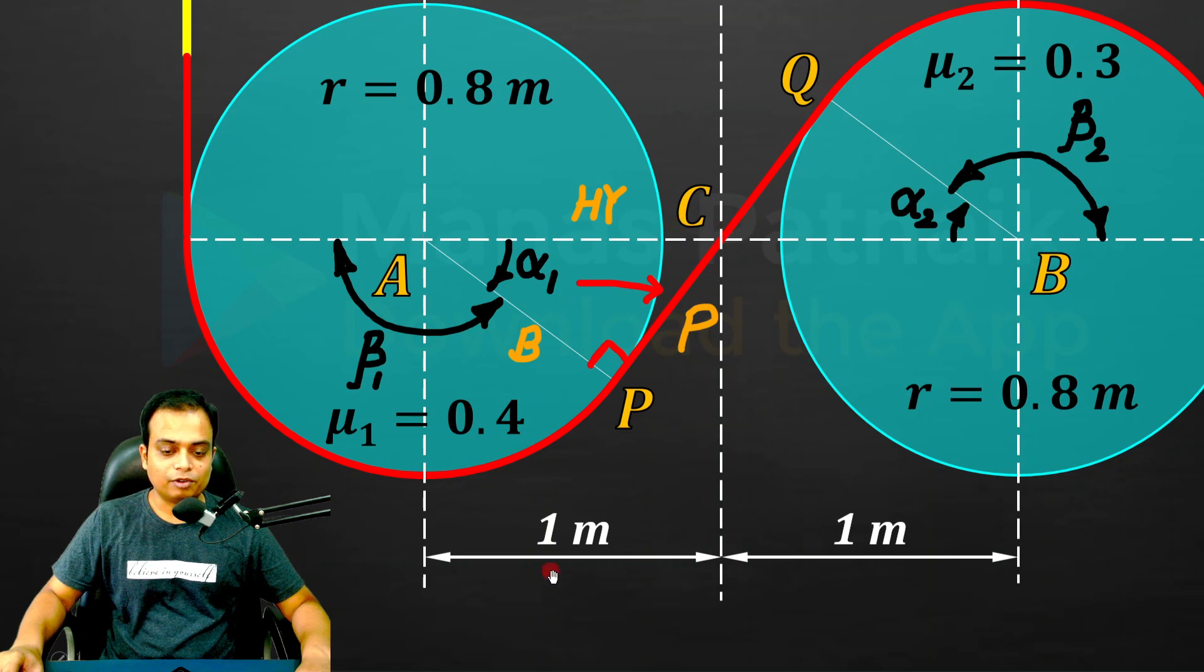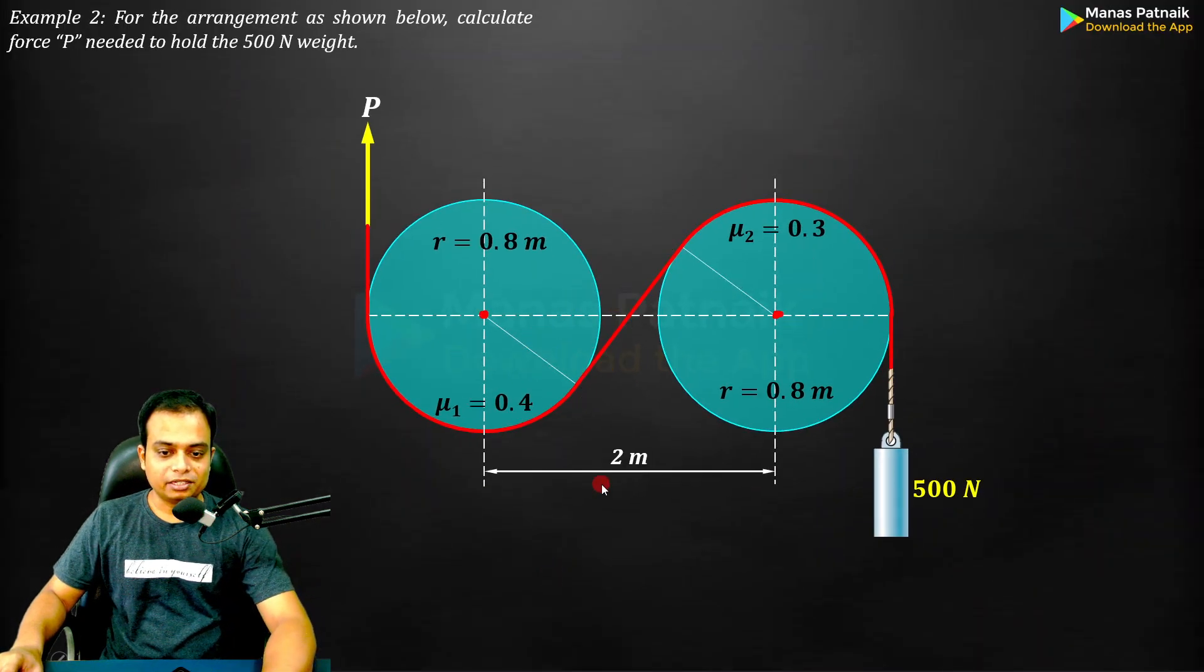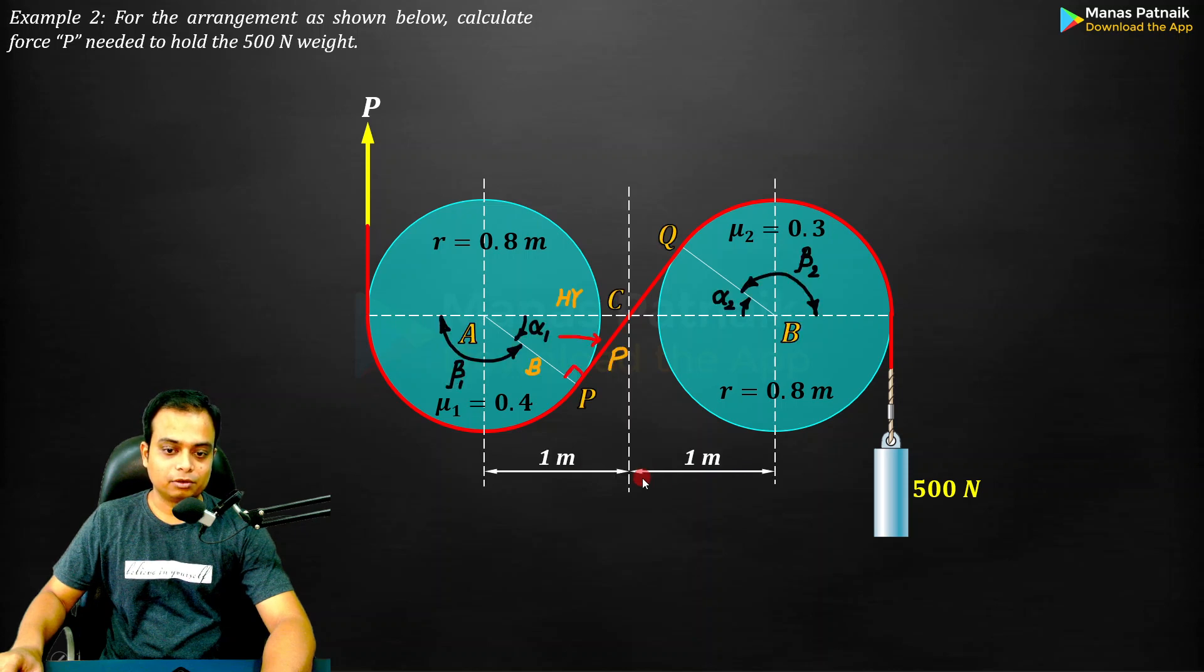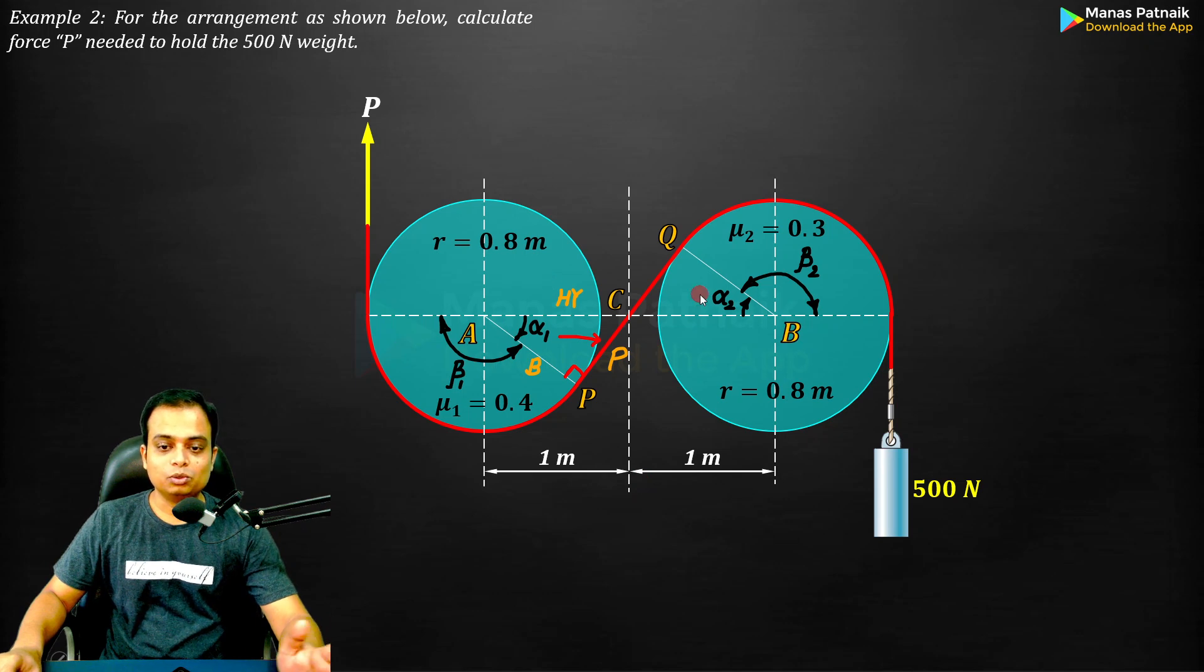This two meter clearly divides into one meter each. It divides equally, the reason being very simple: the two cylinders or drums have equal radius, and there is this rope or cord or belt which has been wound over it in this fashion.